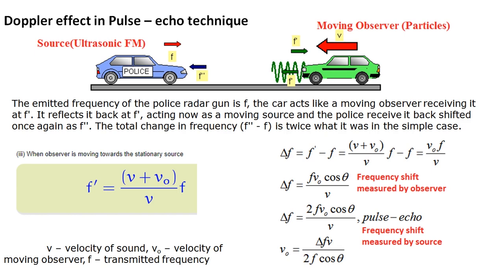What is the pulse echo technique? The source — an ultrasonic transmitter — sends a pulse of frequency f. When any particles come closer or move faster, it causes a frequency shift f'. This shifted signal is the echo. This echo is then measured by the transmitter itself, now operating in receiving mode. This causes a double shift in frequency, giving f double-dash, compared to the simple case where only the observer measures f'.